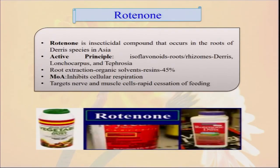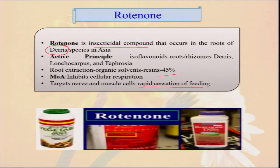One is rotenone — rotenone is also an insecticidal compound obtained from the roots of Derris species. From this root, we also produce rotenone, and different organic products like Derris Home are very much effective to control different types of insects and pests in organic farming. Rotenone also inhibits cellular respiration and targets nerve and muscle cells, causing rapid cessation of feeding. So whenever the insect stops feeding due to different types of biological or chemical changes within its body due to the intake of rotenone, they ultimately die and their population decreases.